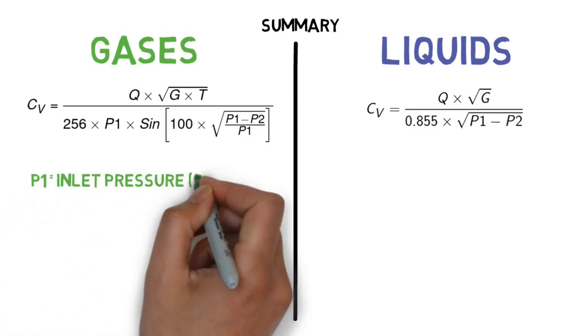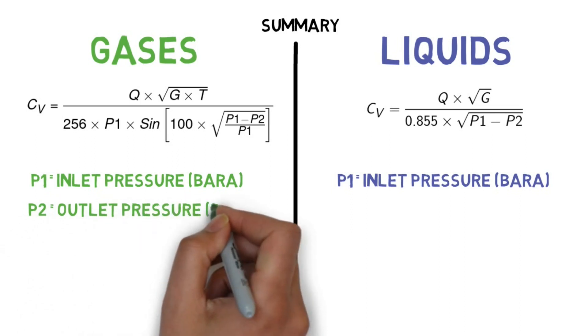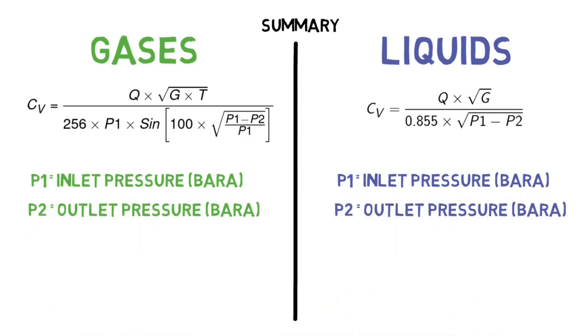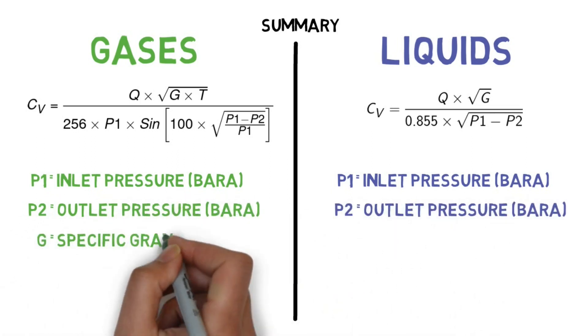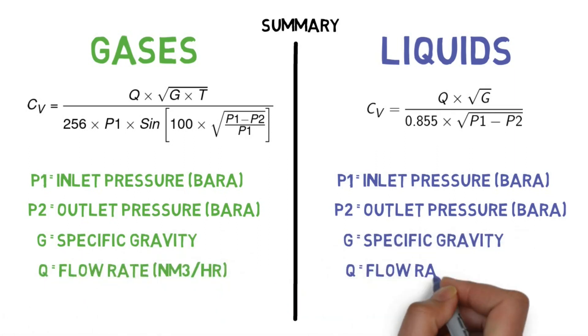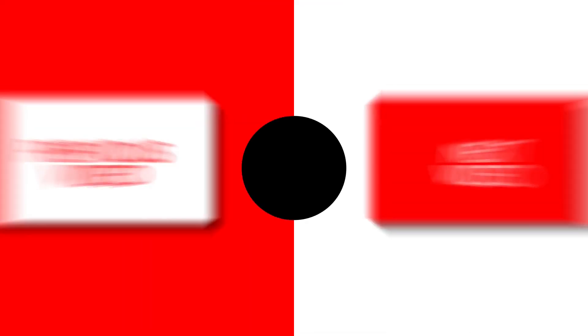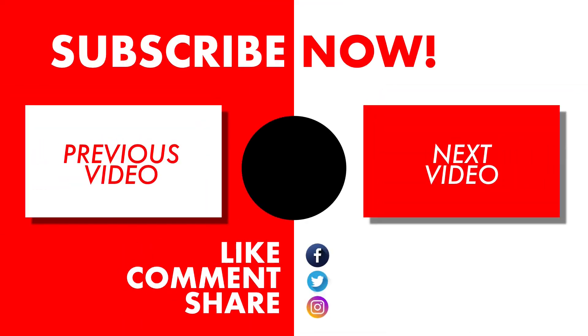P1 is inlet pressure. P2 is outlet pressure. G is specific gravity. Q is flow rate. T is temperature. For more videos like this, subscribe to Simple Science.